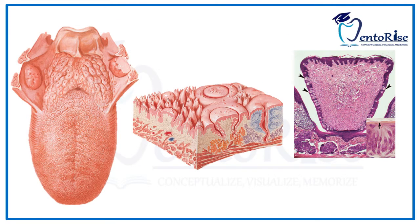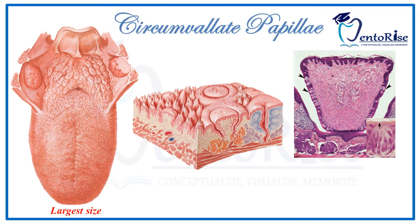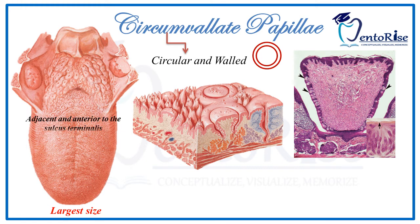Let's talk about the first and the largest papilla present on the surface of the tongue — the circumvallate papilla. As the name suggests, circumvallate papillae are somewhat circular in shape. They are present anterior to the V-shaped groove present on the surface of the tongue, which is called the sulcus terminalis. Please observe the arrows pointing towards these circular structures — these are circumvallate papillae.